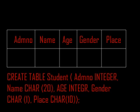The next field is gender. We represent gender as male or female — M for male, F for female — so the data type is character with a length of one. The next field is place, which is always alphabet, so the data type is character.